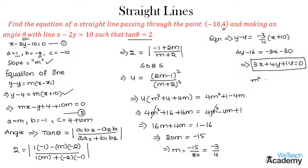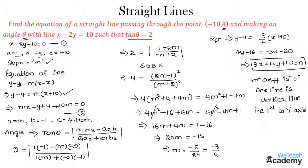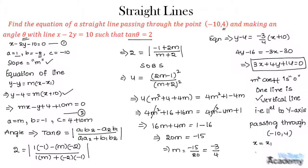Since the coefficient of m² is 0, one line will be a vertical line — that is, parallel to the y-axis — also passing through the given point (minus 10, 4). Its equation is given by x equals x1, that is x equals minus 10, so x plus 10 equals 0.